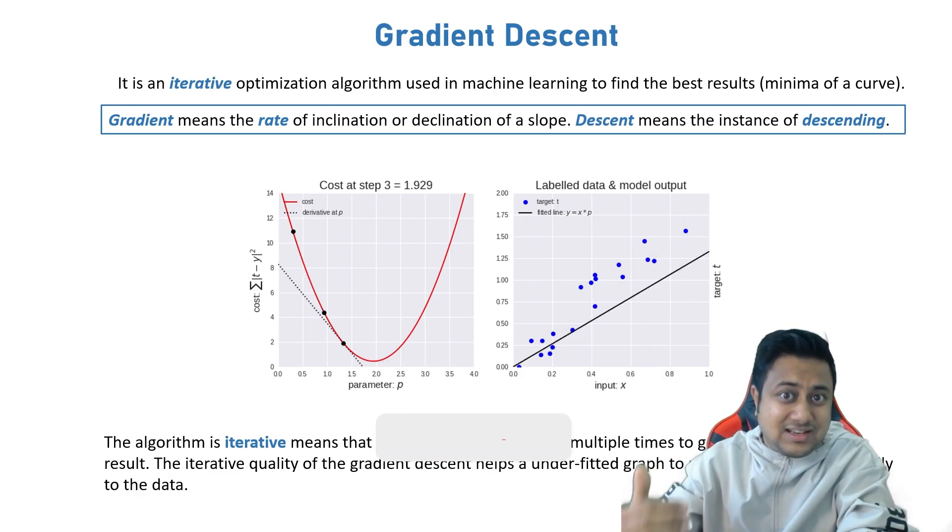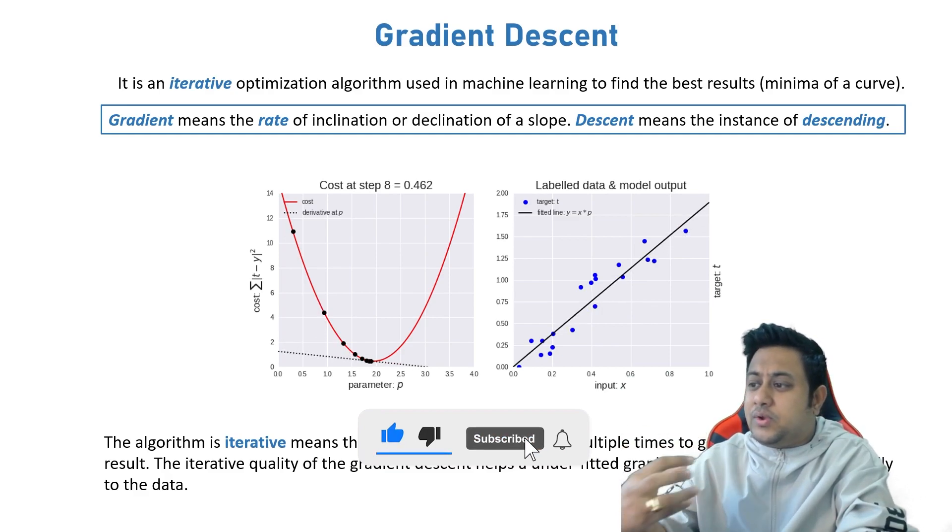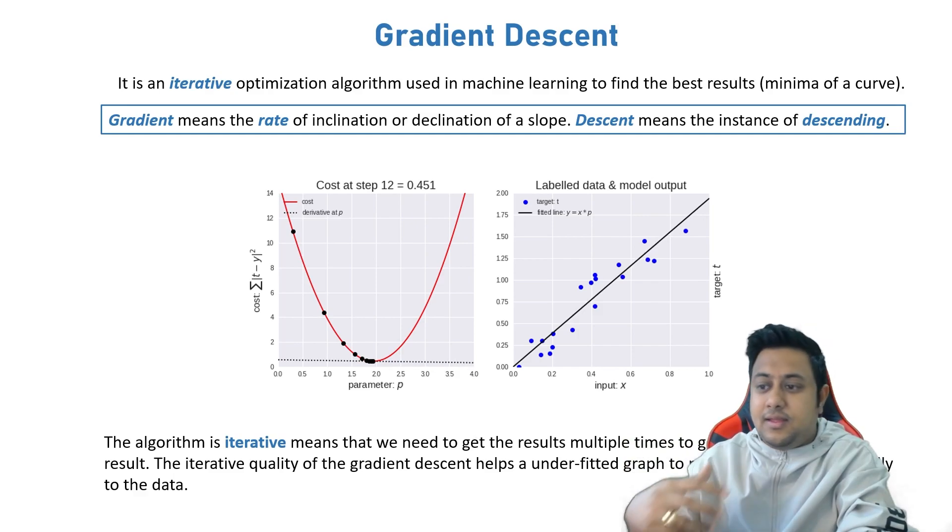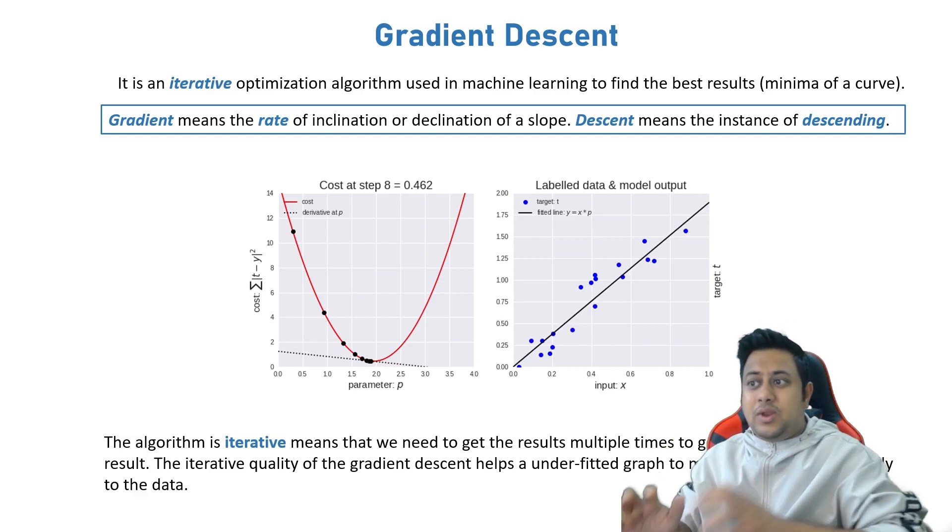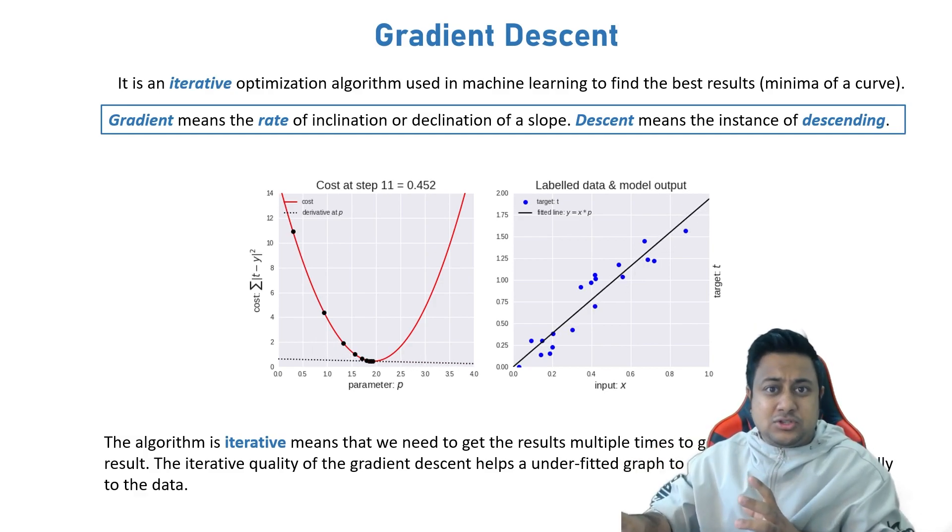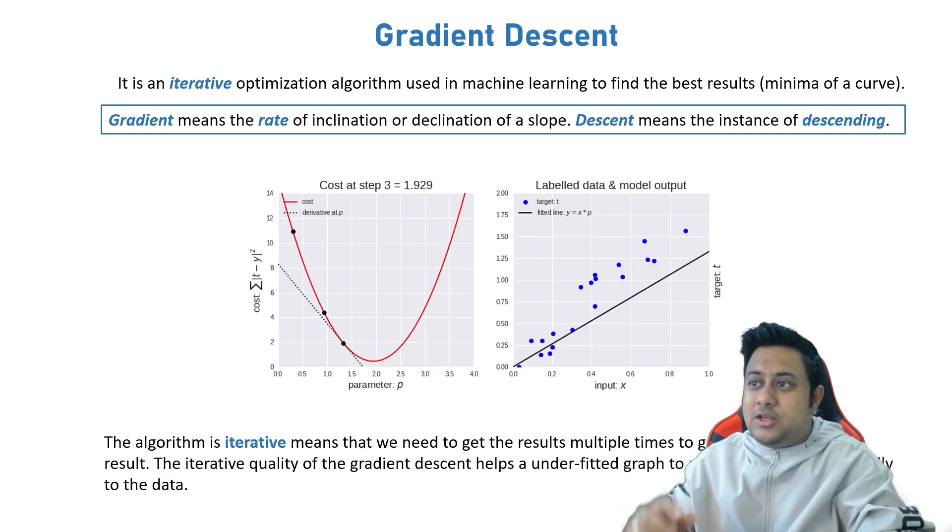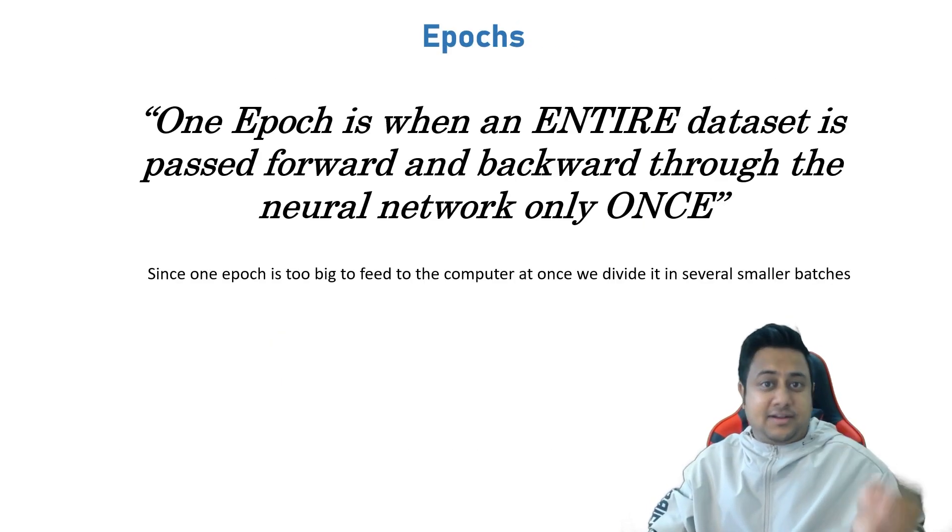Gradient means the rate of inclination or declination of a slope. Descent means the instance of descending. The algorithm is iterative, meaning we need to get the results multiple times to get the most optimal result. The iterative quality of gradient descent helps an underfitted graph to make the graph fit optimally to the data.